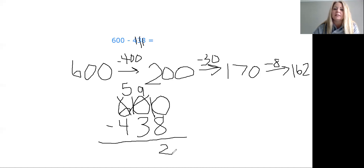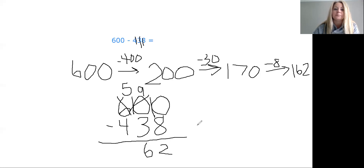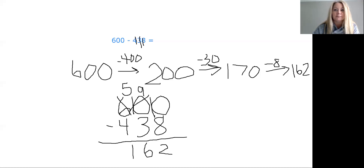So if I take a 10 from my 10 tens, that leaves nine tens and I can give that 10 right over here. And now I have 10 minus eight — 10 minus eight is two. And over here I have nine, nine minus three is six. And if we look in the hundreds place, we have five minus four — five minus four is one. Look at that: 162, just like I got when I used my mental strategy.